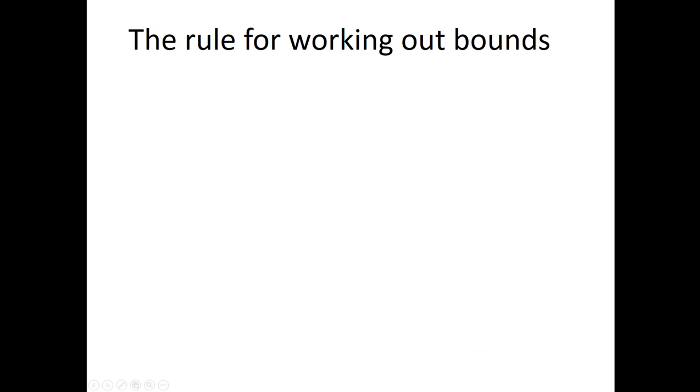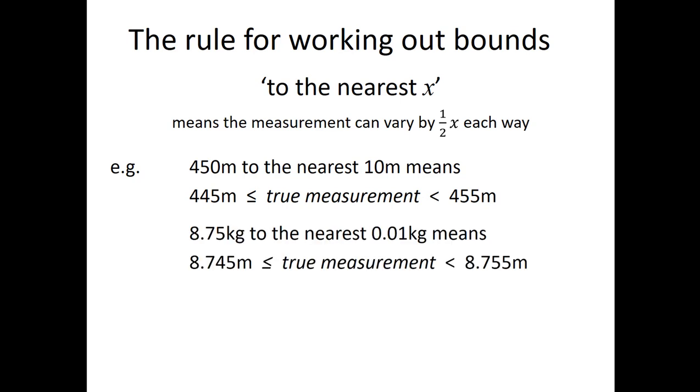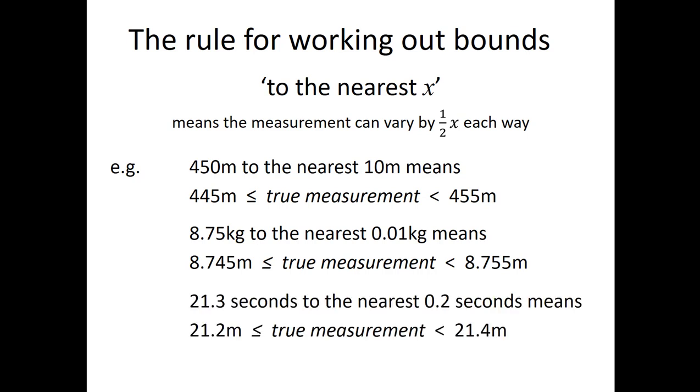In fact, the rule for working out bounds is really pretty straightforward. If you know a measurement to the nearest x, it could be the nearest kilogram, the nearest 0.1 of a metre, the nearest 0.01 of a litre, the measurement can vary by a half x each way. I'll give you a few examples. 450 metres to the nearest 10 metres just means five metres each side of that measurement. So 445 to 455. 8.75 kilograms to the nearest 0.01 kilograms means 8.745 to 8.755. And 21.3 seconds to the nearest 0.2 seconds means 0.1 of a second each side of our actual measurement, between 21.2 and 21.4.